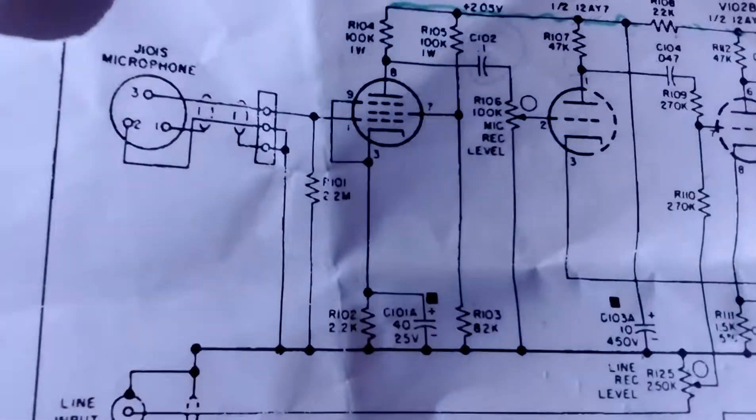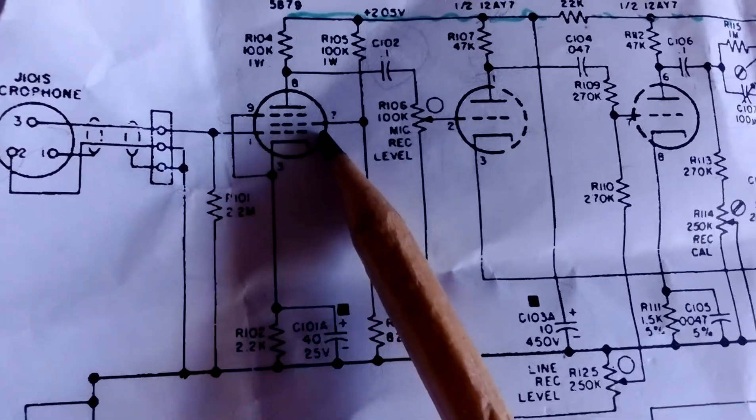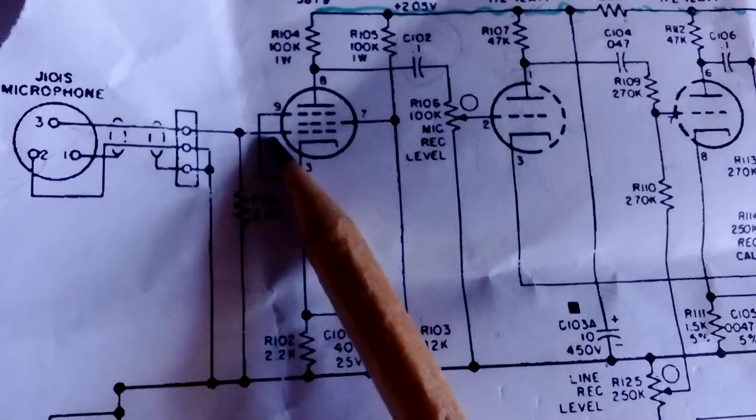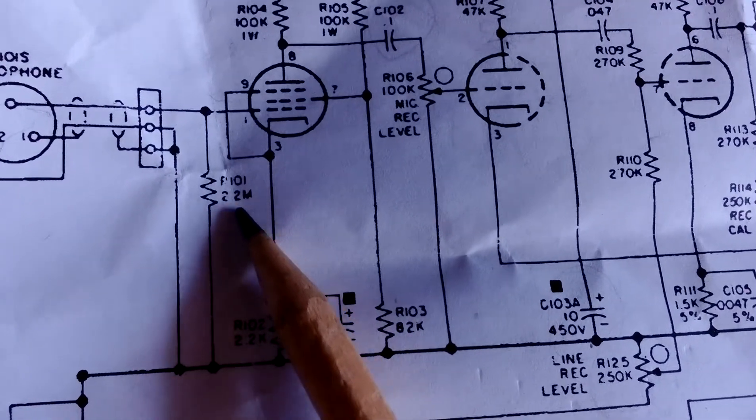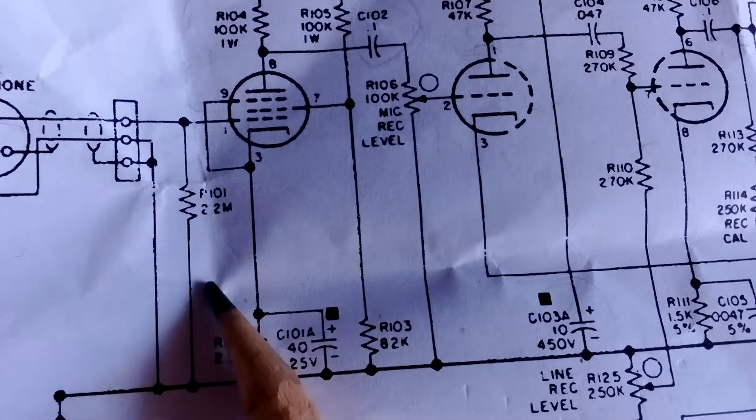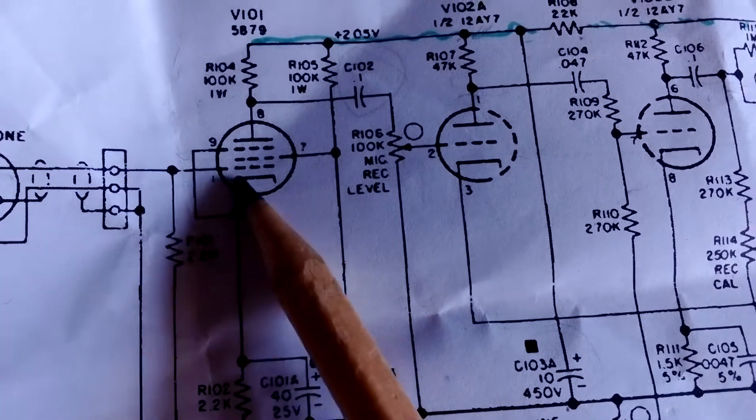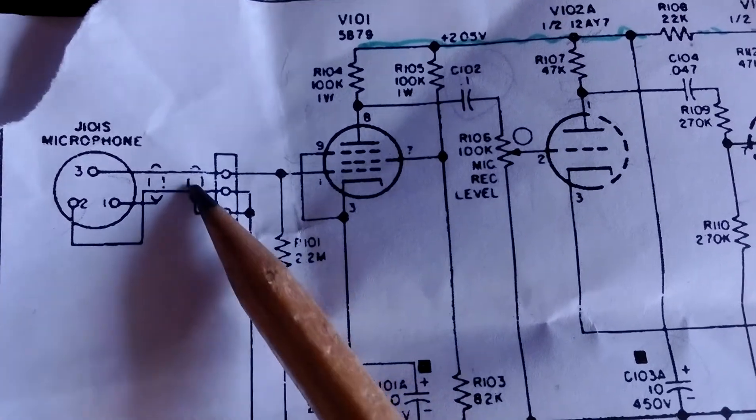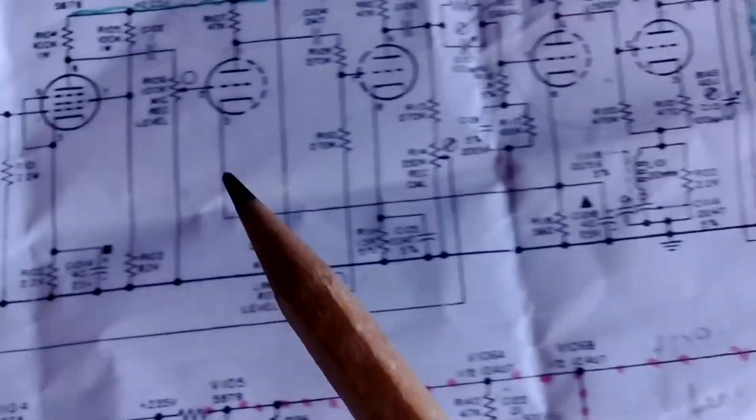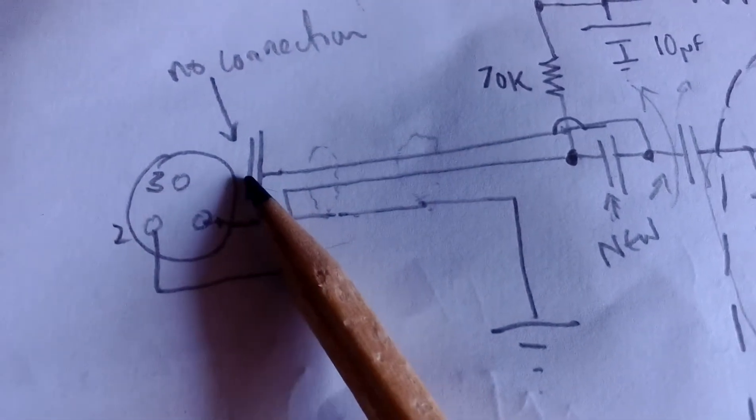I've drawn it out here. This is what the circuit should look like. The signal should be coming in on pin 3 going directly into the grid with nothing really there apart from this 2 megaohm reference resistor to ground. No capacitors or anything, just going directly into the grid. Pin 2 should be connected to ground. Instead, we've got pin 3 isn't connected at all.